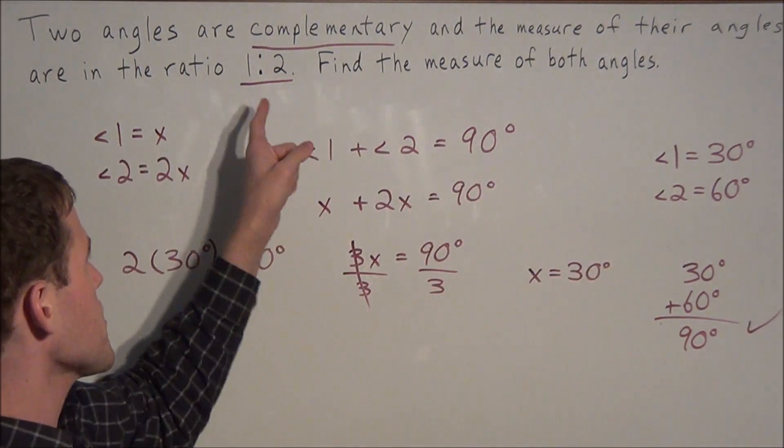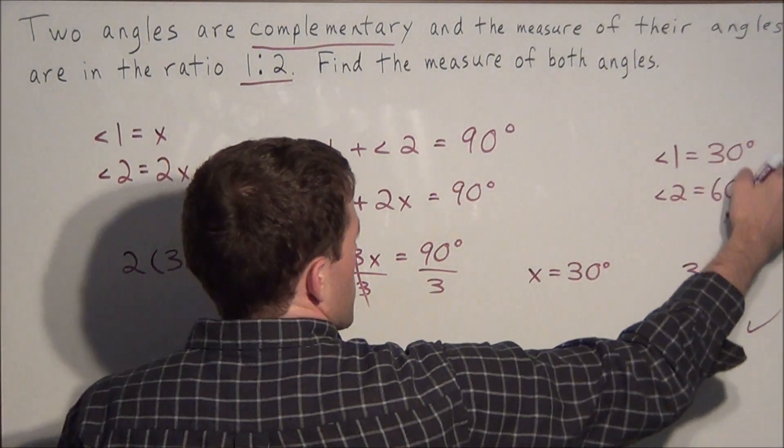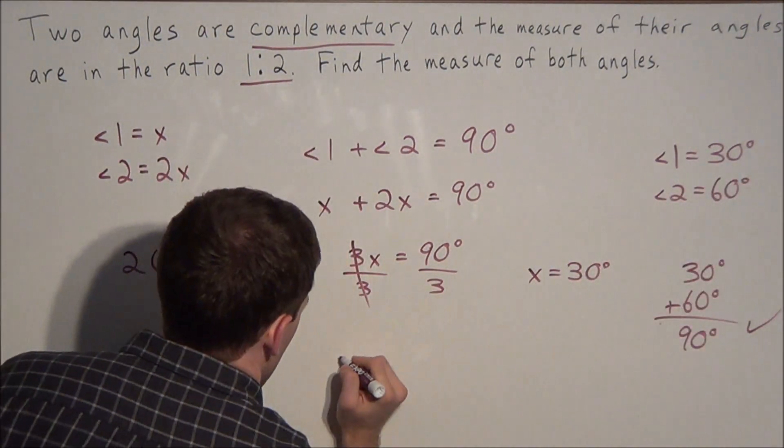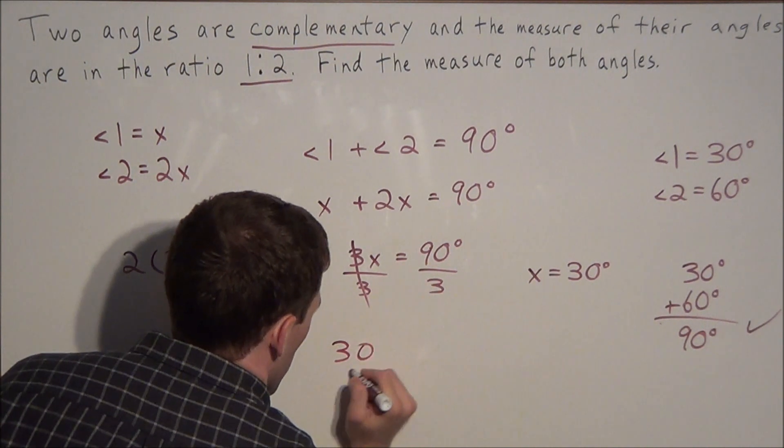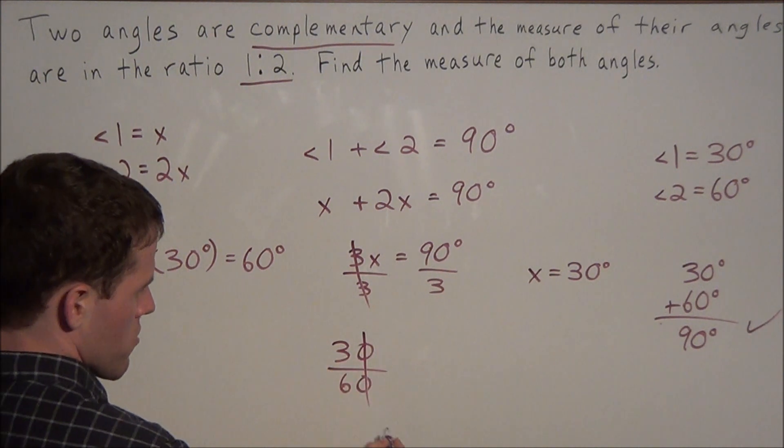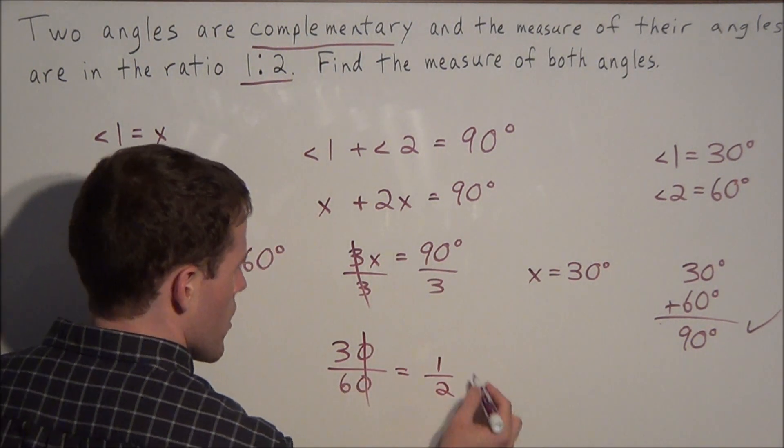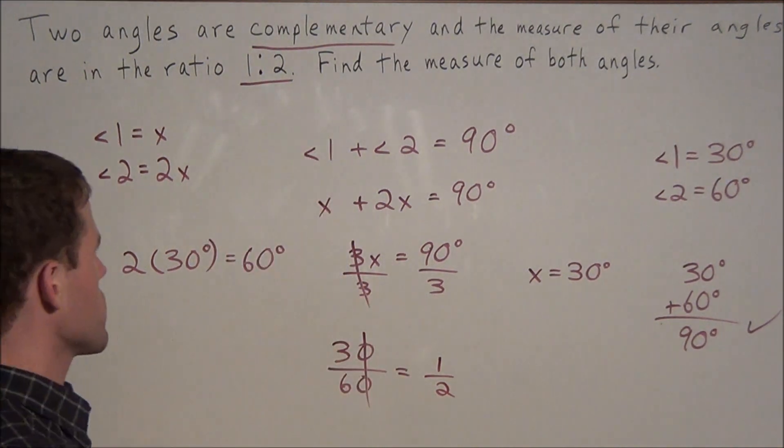And the second check, the ratio of the angles is 1 to 2. So when we set the measure of both angles as a fraction, 30 over 60, this reduces to 1 half. Notice the common zeros cross off, and then 3 over 6 reduces to 1 half, which sends us right back to that ratio 1 to 2.